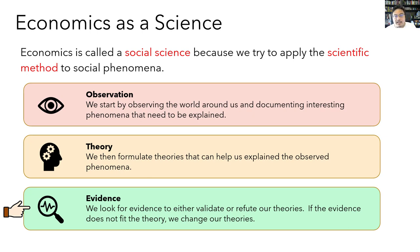The scientific method is an iterative process. New observations and new theories are always being made, and economists are always evaluating the evidence. Sometimes new theories are devised to explain old observations as our ideas develop, and sometimes new evidence arrives that sheds new light and causes us to revisit old theories.